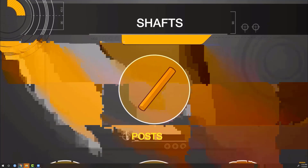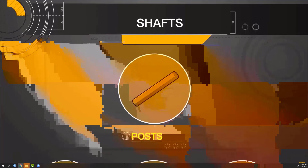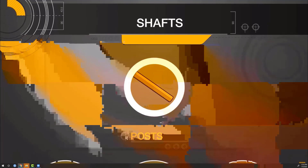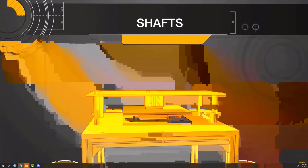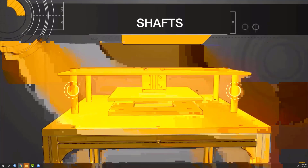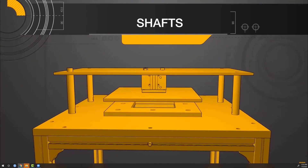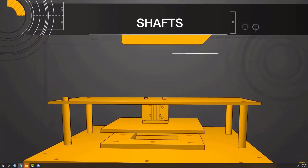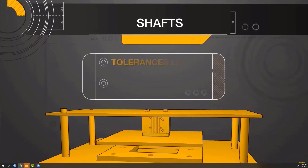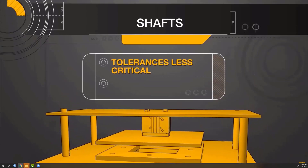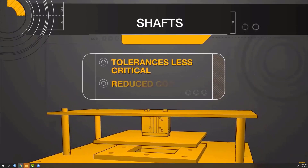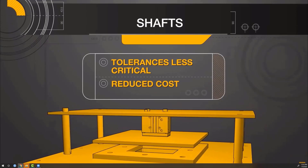Posts are commonly used as support features within an application. Also known as standoffs, these shafts are meant for static support. Because posts and their mating components are not in motion, tolerances are not as critical, leading to a reduced cost.